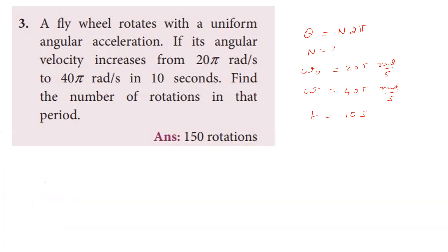Using the formula for uniform angular acceleration: the angle rotated equals average angular velocity multiplied by time taken, which is (final angular velocity + initial angular velocity) / 2 × time. In place of theta we write n × 2π. So: n × 2π = (ω_f + ω_i)/2 × t. With ω_f = 45 rad/s = 45 radian per second and ω_i = 25 rad/s, the average gives 40π effectively after unit conversion.